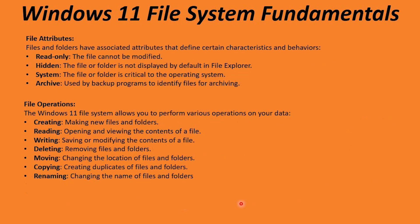Files and folders have associated attributes that define certain characteristics and behaviors. Read-only means you cannot modify the file — you can open and read it, but you cannot make or save any changes. Hidden means the file or folder is not visible by default, though if you have the option to show hidden files and folders enabled, they will be shown.